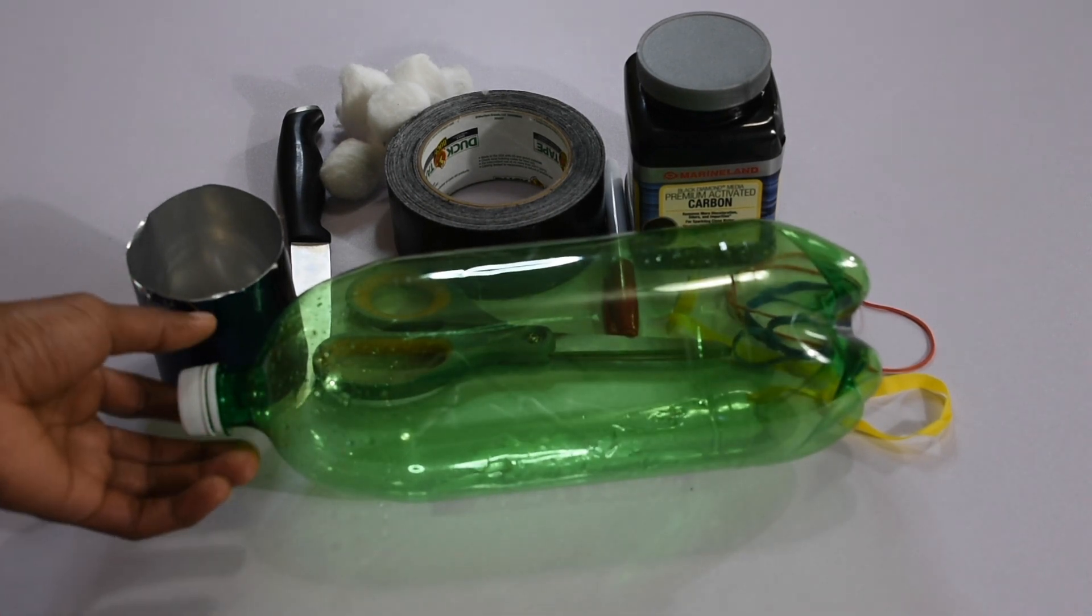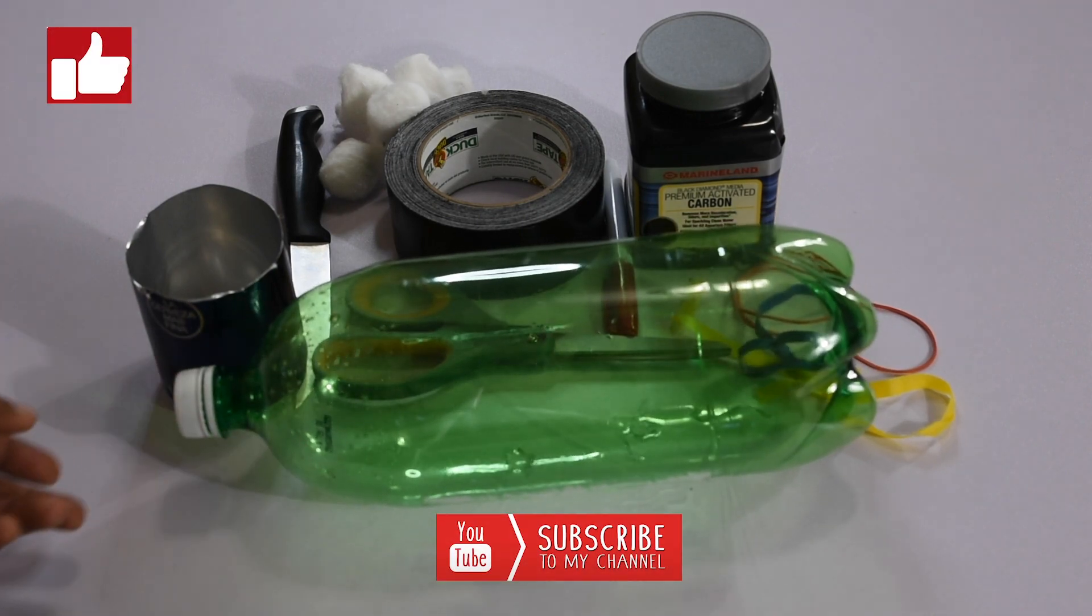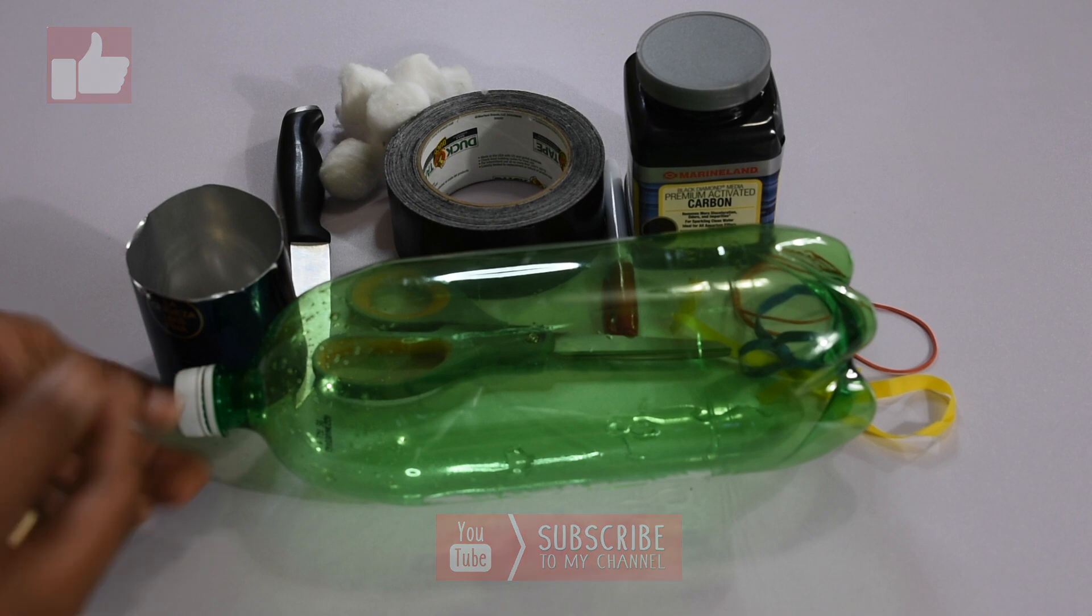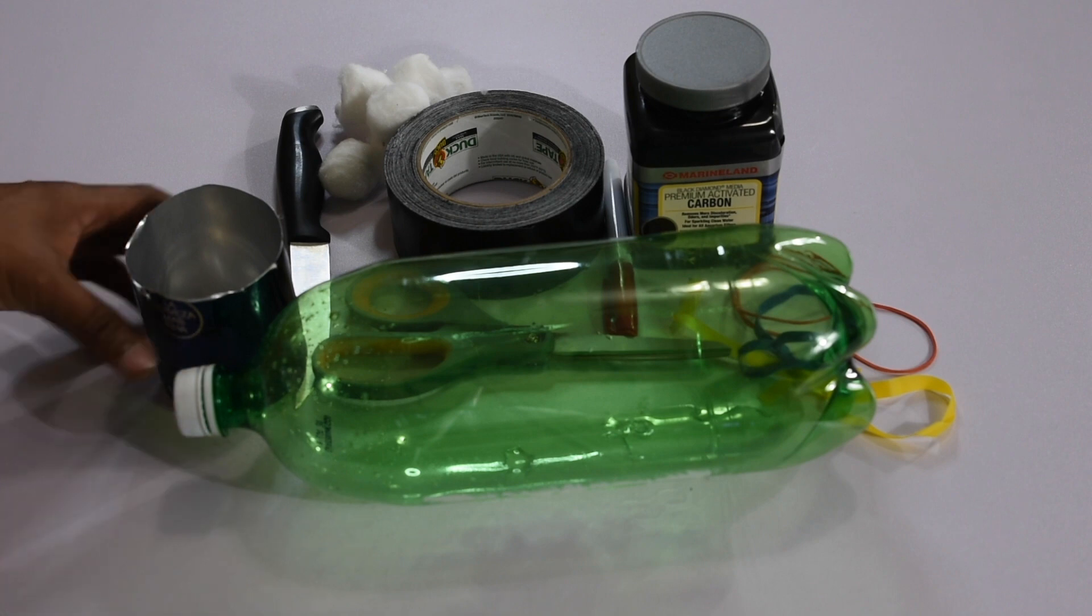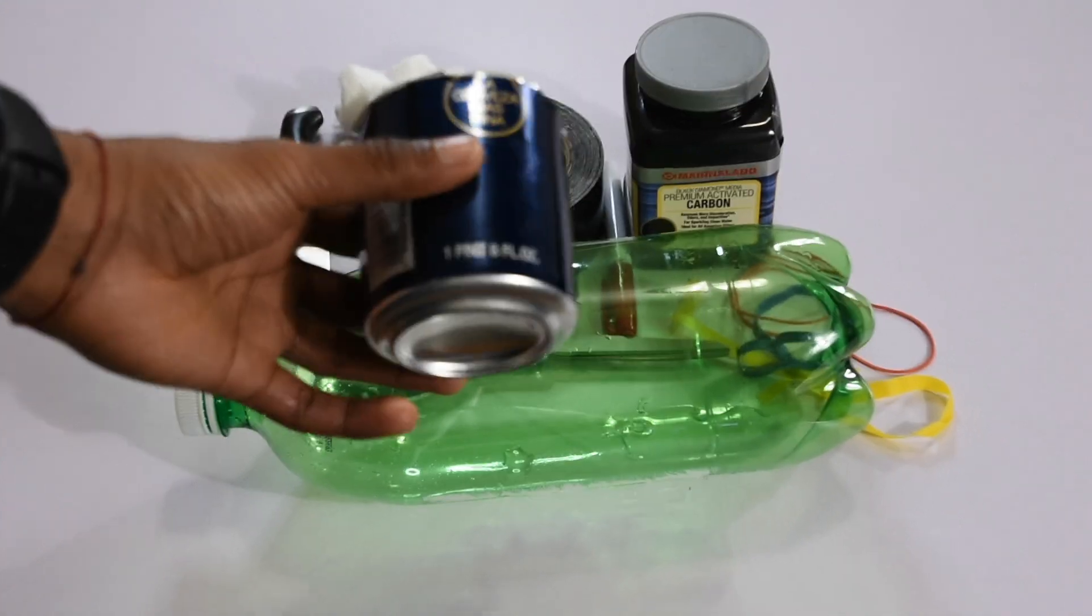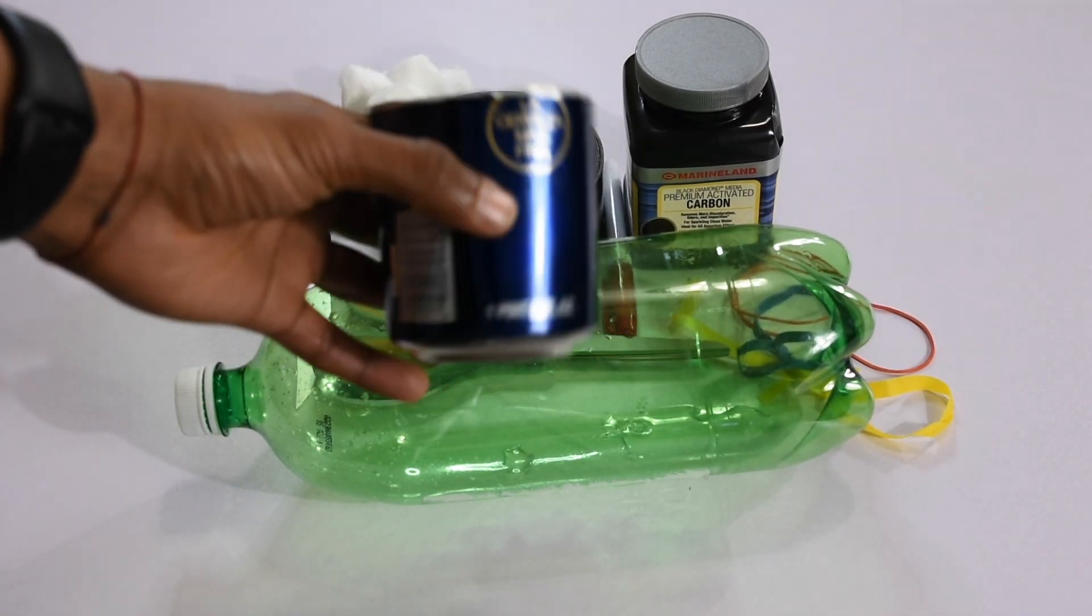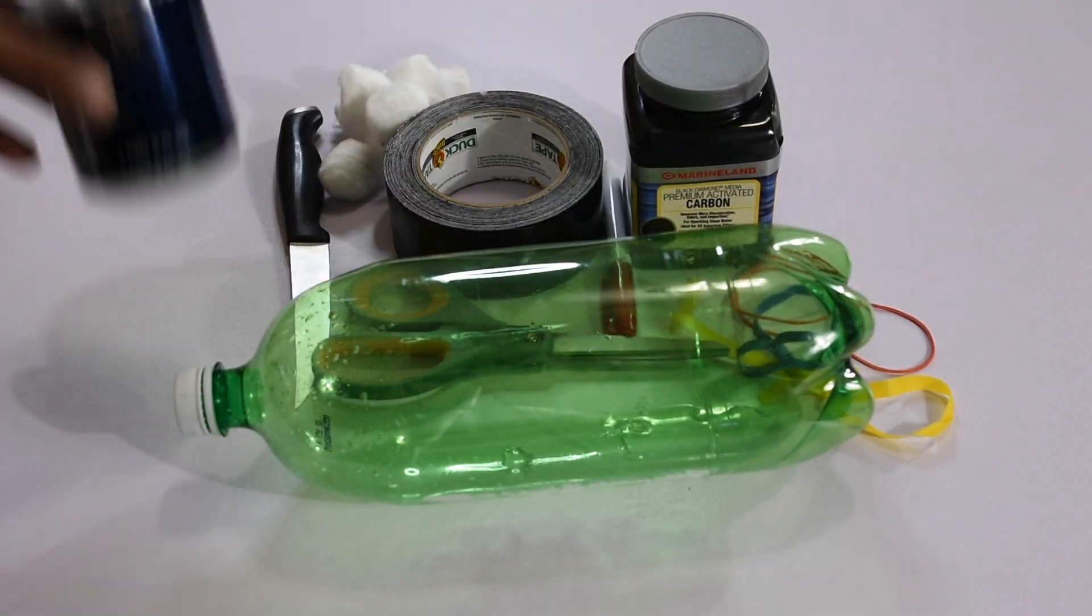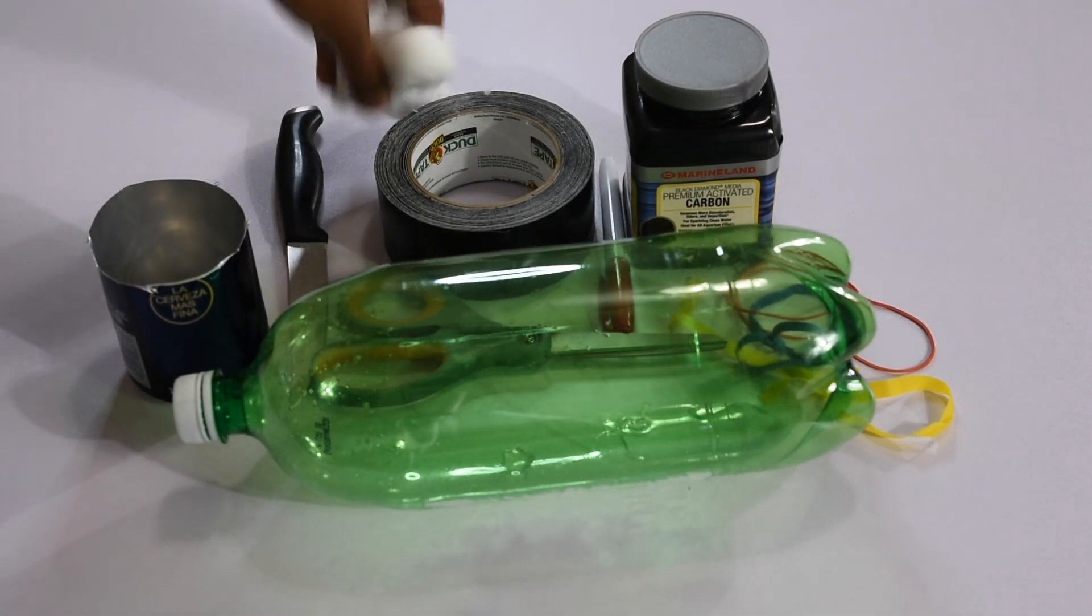Alright guys, so as always before we start an experiment we're going to need materials to actually do the experiment. So in this case we're going to need a soda bottle. Try to get a clear soda bottle. I kind of messed up and bought like ginger ale which is a green bottle, I wasn't thinking about it at the time, so we're just going to use this first experiment. But try to get a clear soda bottle, get a can of soda or anything like that and just cut it in half.